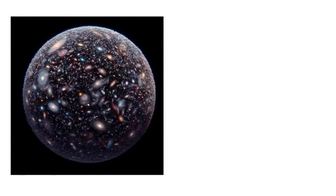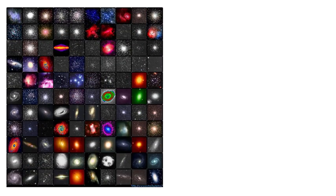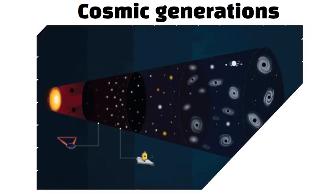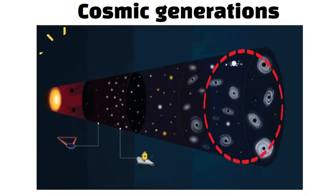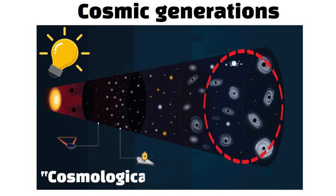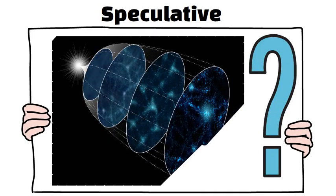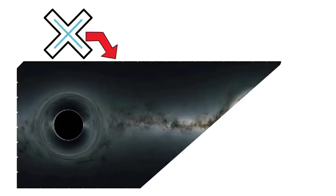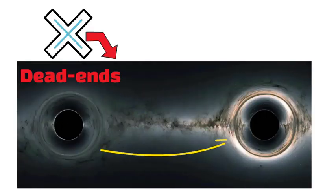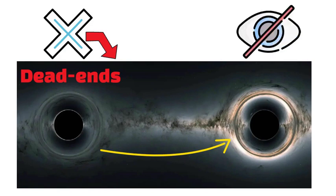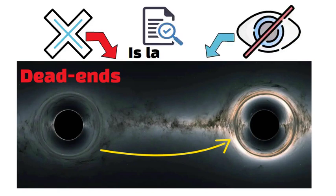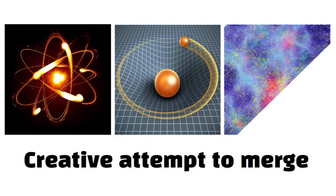If true, our universe might be the offspring of a black hole in a parent universe. Meanwhile, every black hole we see could contain its own baby universe. Over cosmic generations, universes that produce lots of black holes might have more descendants, leading to an idea sometimes called cosmological natural selection. This proposal is speculative, but it's a neat explanation for how universes might reproduce. Rather than black holes being dead ends, they become cosmic cradles of new reality. We can't see inside a black hole's event horizon from our side, so direct evidence is lacking, but it's a creative attempt to merge quantum theory, gravity, and cosmic origin stories.